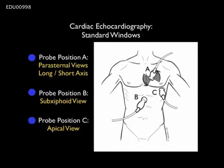For the evaluation of the pump, we're going to utilize the three main cardiac windows. Probe position A is the parasternal window, with two main views: the parasternal long and short axis views. We can move the probe further inferiorly to the subxiphoid position as probe position B, seeing the heart from a more inferior aspect. We can then move the probe more laterally to probe position C, the apical window, offering several views from a more lateral orientation.